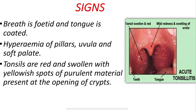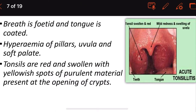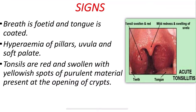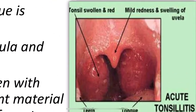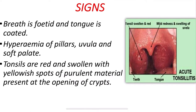Signs of tonsillitis: the breath is fetid (foul-smelling) and the tongue is coated. There is hyperemia — excess blood supply — of the pillars, uvula, and soft palate, causing redness and swelling. The tonsils are red and swollen with yellowish spots of purulent material present at the openings of the crypts.